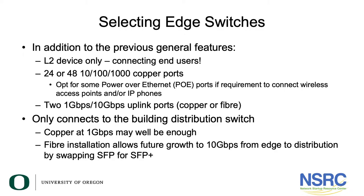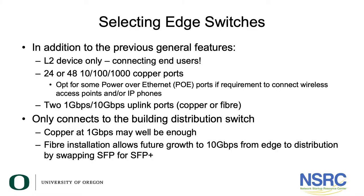Specify the power over Ethernet needs according to what the campus requires. For uplinks, either two 1 gigabit ports or two 10 gigabit ports are sufficient. They could be copper, but they're more likely to be fiber. In fact, a lot of switches recently have ports that can be dual personality depending on which SFP is plugged in. These edge switches only connect to the building distribution switch, so copper at a gigabit per second may well be enough. You could bond these two ports together to give you two gigabits per second if needed. But installing fiber allows future growth to 10 gigabits per second simply by swapping an SFP for an SFP+ to give you that 10 gigabit capacity.